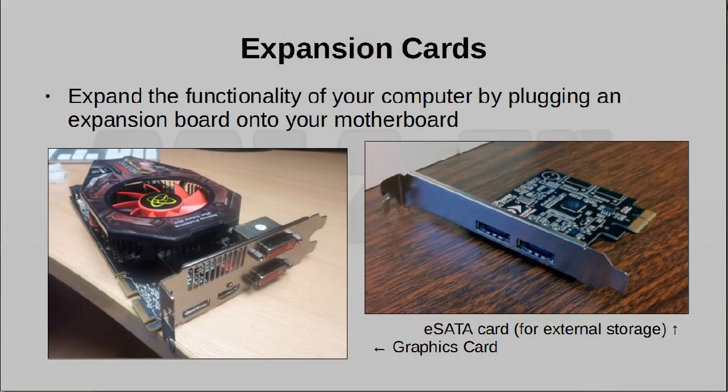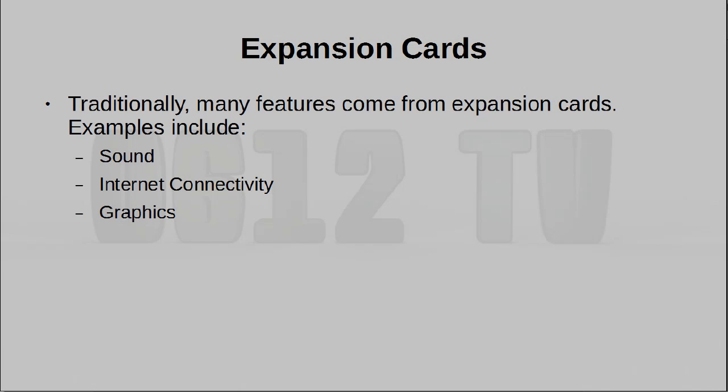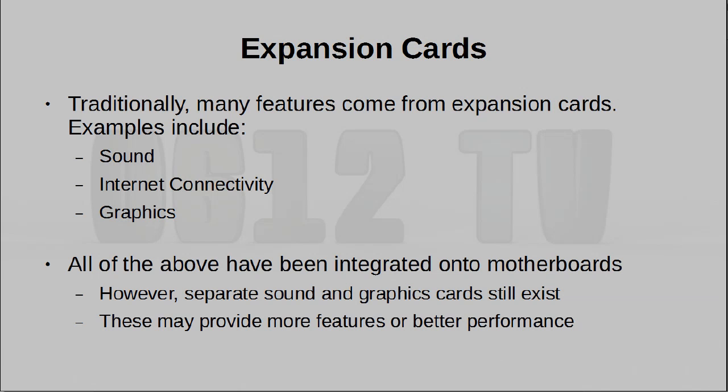We mentioned expansion cards, and expansion is in fact one of the big features available on a motherboard today. You can get cards that plug into your motherboard and extend its functionality. For example, in a lot of computers, the graphics card is actually an add-on. In the past, there were several other types of cards, for example a network card or a sound card, and these have actually been assimilated onto most motherboards these days. Most motherboards now supply networking and audio capability on the board itself. Earlier, about 20 years ago, if you wanted audio on your computer, you actually had to buy an audio card and plug it in.